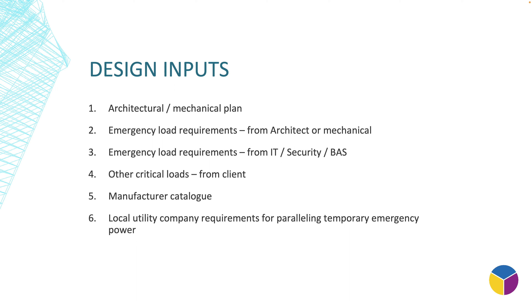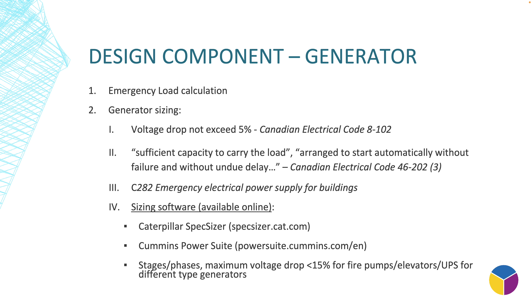Other loads include IT, security, BAS, and critical loads like healthcare project loads in the hospital. We also need manufacturer catalogs — once you get the generator size, you look at the catalog to find the weight and dimensions, then create a layout for your generator room. The last input is the local utility company requirement for paralleling or temporary emergency power, which covers the different generator operating modes.